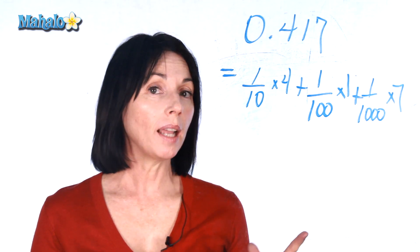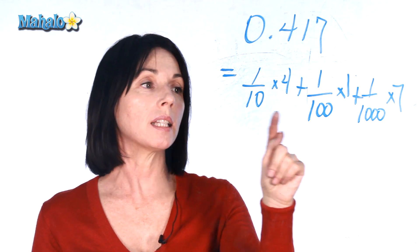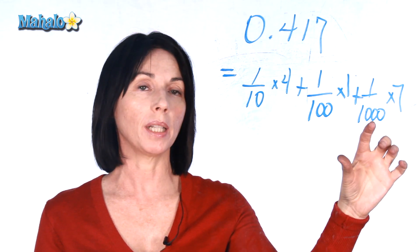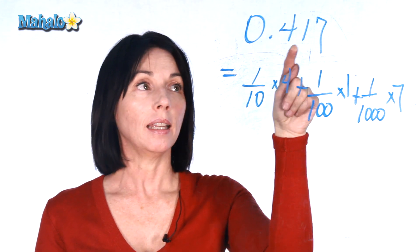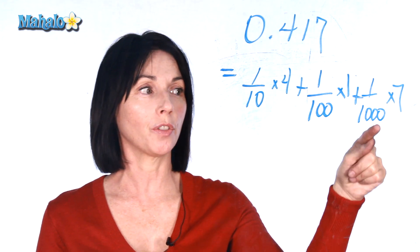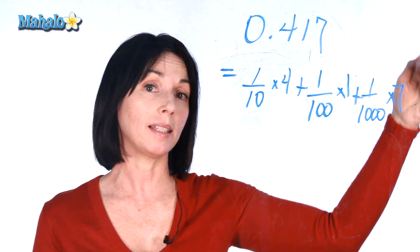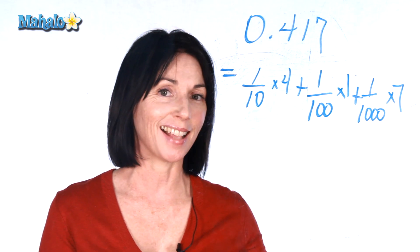Now, what you might notice is that each position away from the decimal increases the number of zeros in the denominator. So in this position, you're dividing by 10. In this position, you're dividing by 100. In the third position, you're dividing by 1,000, and it'll just keep going like that. You'll divide by 10,000 and then 100,000, etc.